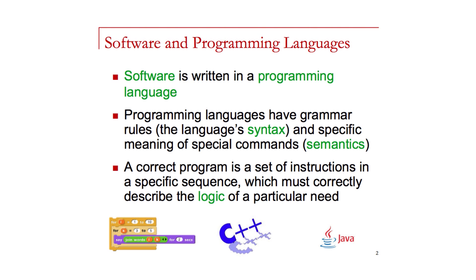Software is written or creatively expressed in a programming language. Programming languages have grammar, which are rules related to syntax. Just as students in English class diagram sentences and parse their meaning, a programming language also needs to be parsed according to its proper syntax. A programming language also has semantics — each part of the language has special constructs or words that mean specific things. A correct program is a set of instructions in a specific language where the sequence correctly describes the logic of what the program needs to do.